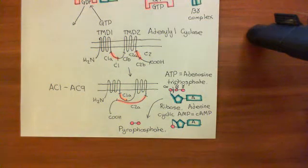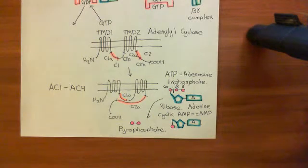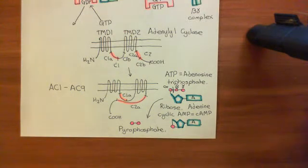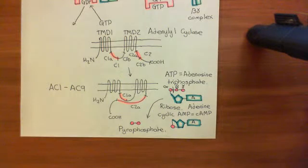Welcome back to this next video in which we are discussing the opioid receptors. We are looking at the downstream pathway for opioid receptors, and we've discussed that they activate heterotrimeric G proteins of the GI form, which means the alpha subunit is an alpha-I form — either alpha-I1, alpha-I2, or alpha-I3. You produce an alpha-I GTP subunit and also a beta-gamma subunit, and these can go on to interact with certain targets.